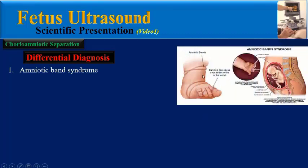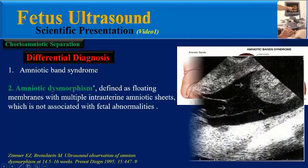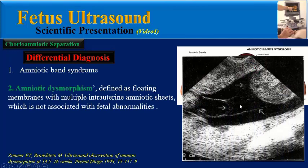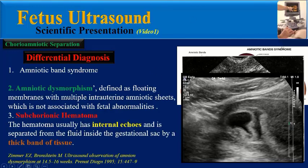Amniotic dysmorphism is defined as floating membranes with multiple intrauterine amniotic sheets, which is not associated with fetal abnormalities. Another differential is subchorionic hematoma; the hematoma usually has internal echoes and is separated from the fluid inside the gestational sac by a thick band of tissue.